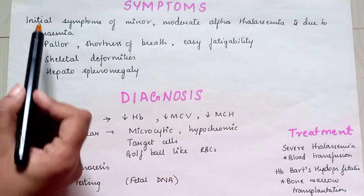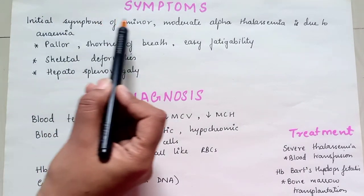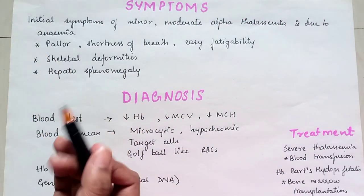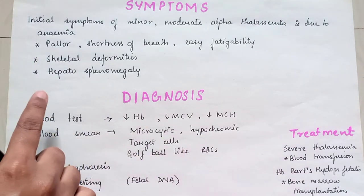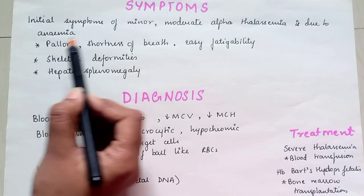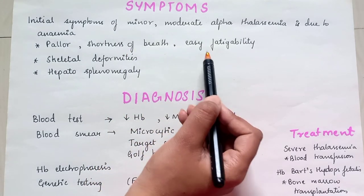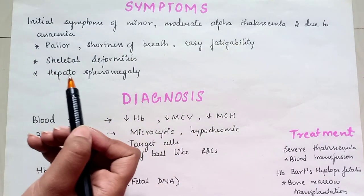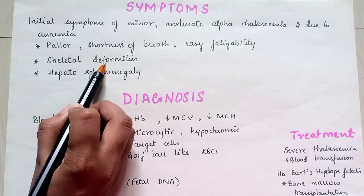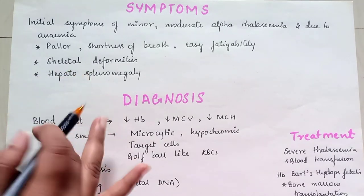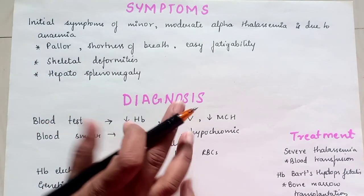Now we come to the symptoms. Initial symptoms of minor or moderate alpha thalassemia are due to anemia, such as pallor, shortness of breath, and easy fatigability. We can also see skeletal deformities and hepatosplenomegaly.